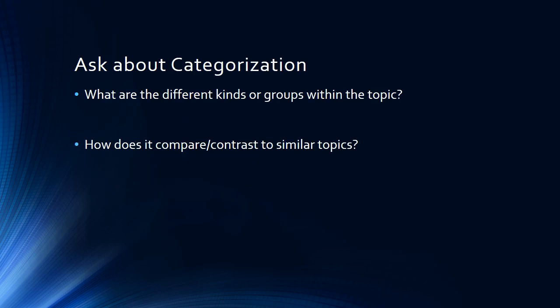You want to ask about categorization. What are the different kinds of things or groups within the topic? What are the different elements involved, and how might they be divided or categorized? If you compare this topic or phenomenon to something similar — to similar issues — how does it compare or contrast? Are there similar groupings or categories within the topic as things that are similar to it?